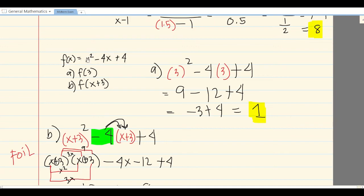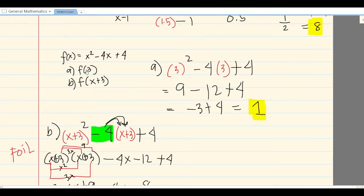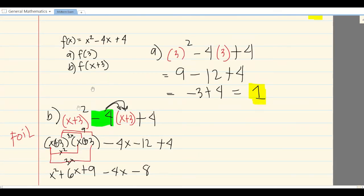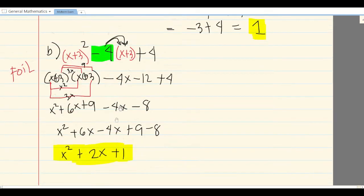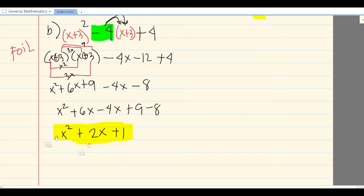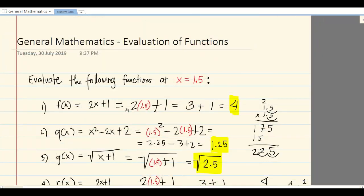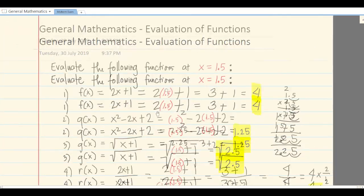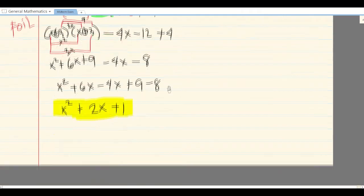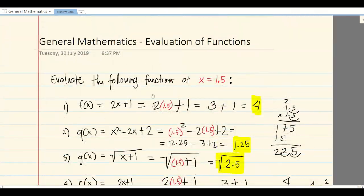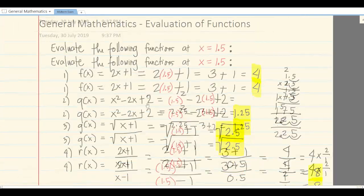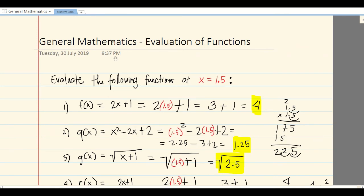To summarize: copy the equation, then erase x and replace it with what is given. For part A, the given is 3; for B it's x+3. That's what you substitute. Then solve and get the final answer. Hope you learned about evaluation of functions. It's easy, and hopefully you can answer your tests. Thank you and God bless.